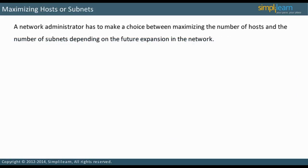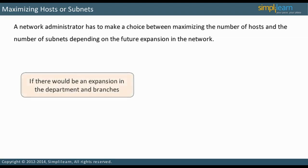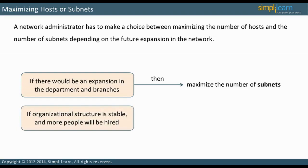A choice must be made between maximizing the number of hosts and subnets; the appropriate decision depends on how the network administrator views future expansion. If more departments and branches will be created, maximizing the number of subnets is the right decision. If the organizational infrastructure is fairly stable and more people will be hired, then maximizing hosts is the better approach. There is also middle ground with VLSM: using the private address space 10.0.0.0/8, larger subnets with slash 16 as well as smaller networks with slash 24 can be created.